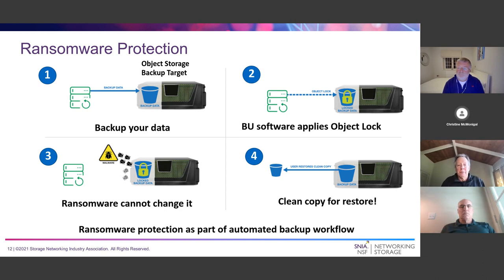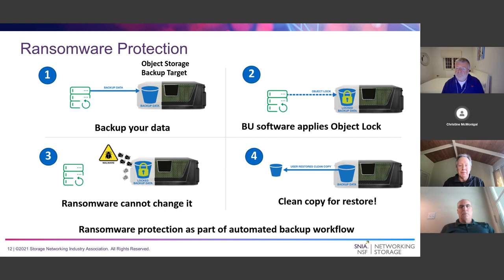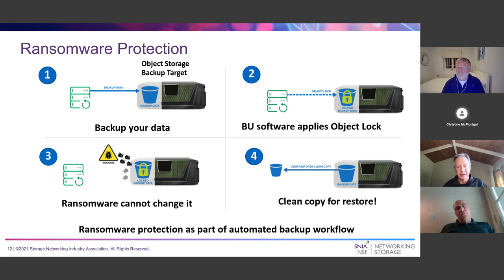This time lock works by applying a policy — for example, keeping data immutable for 90 days. During that time, you write new incremental or full backup copies, and at the end of 90 days you can delete the original, so data doesn't accumulate forever. This is the first backup protection with immutability that is completely automated. The S3 API is critical here because you have a standard for writing and protecting data, and multiple vendors support it — making it part of a standard backup workflow. This has been a leading use case for object storage over the last two years.